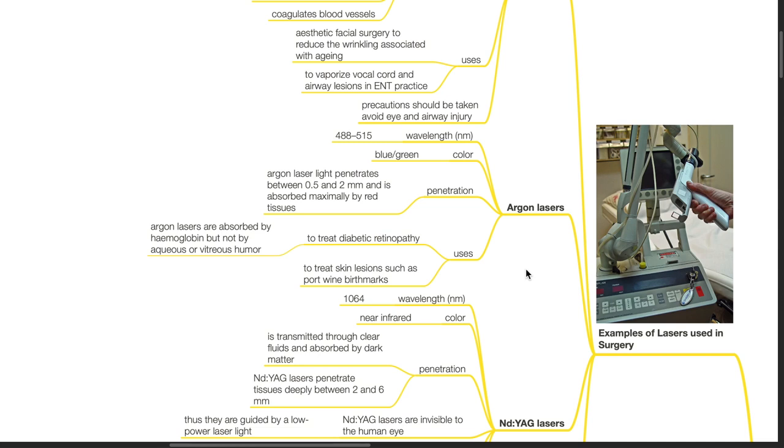Argon lasers. Wavelength is 488 to 550 nm. Colour is blue to green. Penetration: Argon laser light penetrates between 0.5 and 2 mm and is absorbed maximally by red tissues. It is used to treat diabetic retinopathy. Argon lasers are absorbed by hemoglobin but not by aqueous or vitreous humor. Argon lasers are also used to treat skin lesions such as port wine birthmarks.